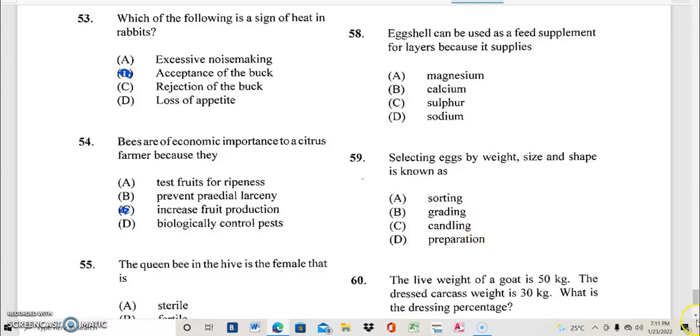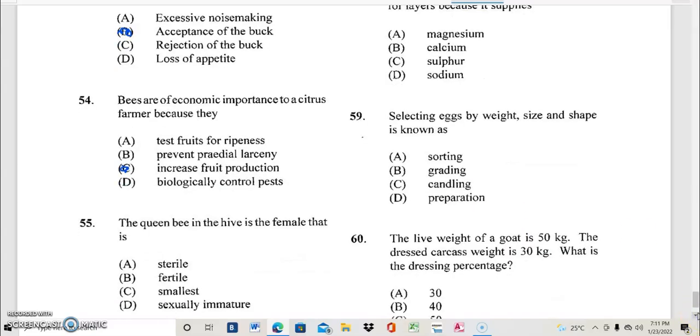Question 55. The queen bee in the hive is the female that is? And the best possible answer for 55 is the queen bee in the hive is a female that is fertile. And we are going down nicely.